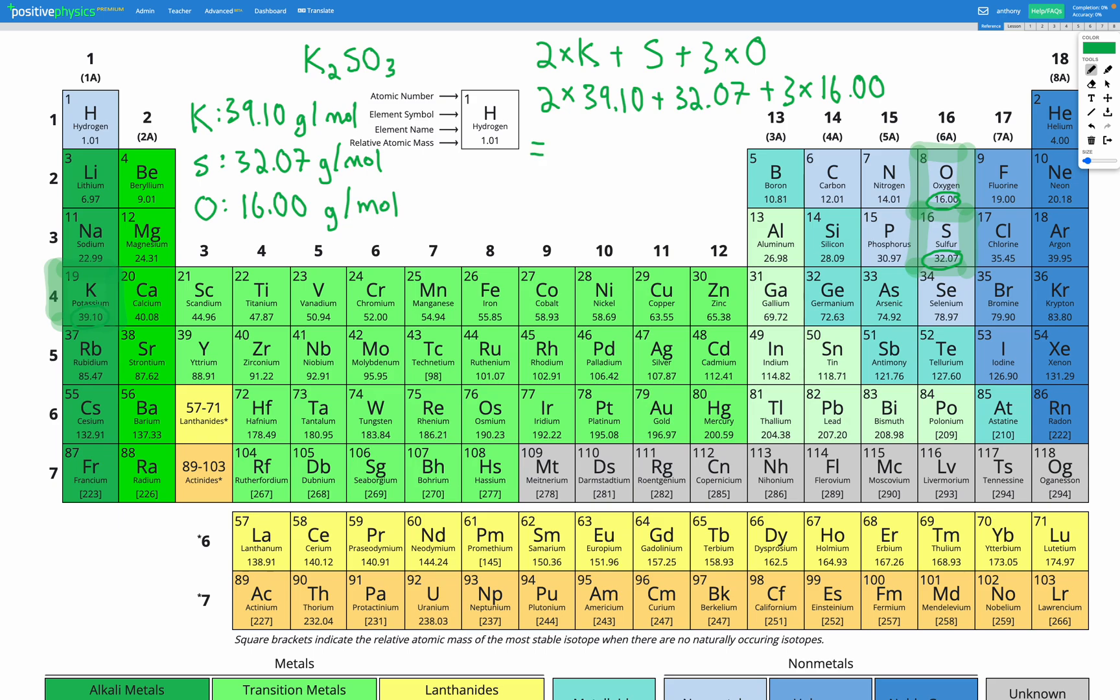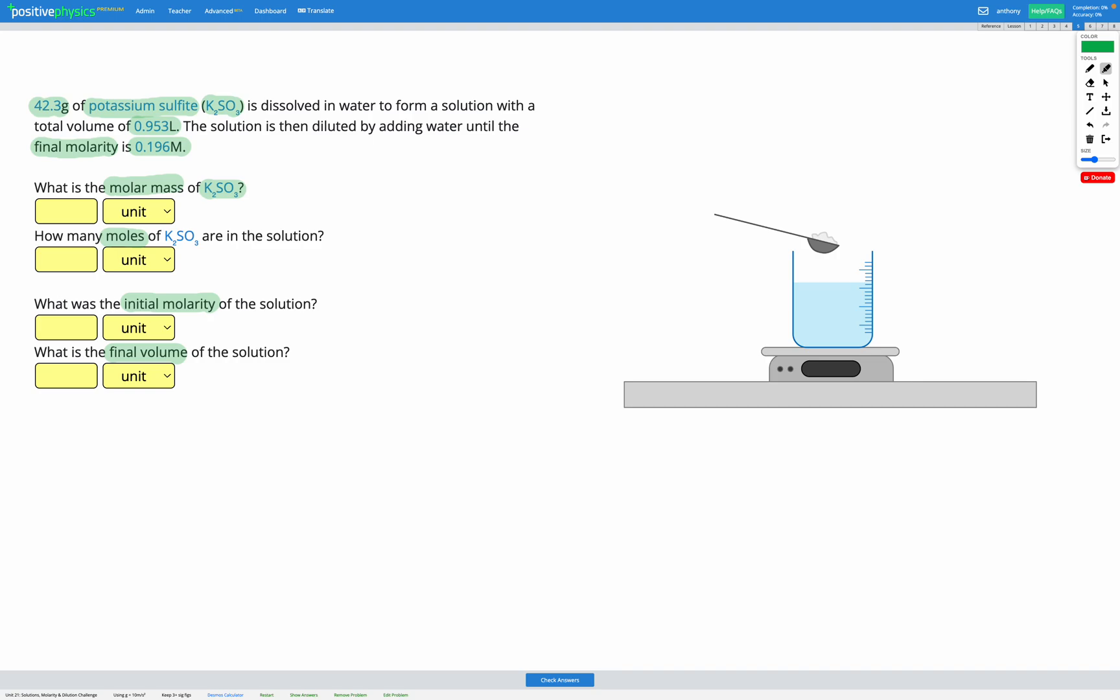If we multiply it out and add all of that up, we get our molar mass for K2SO3 of 158.27 grams per mole. So there's our molar mass of K2SO3. We can fill that in here: 158.27 grams per mole for K2SO3 molar mass. Awesome, first step done. Next question.